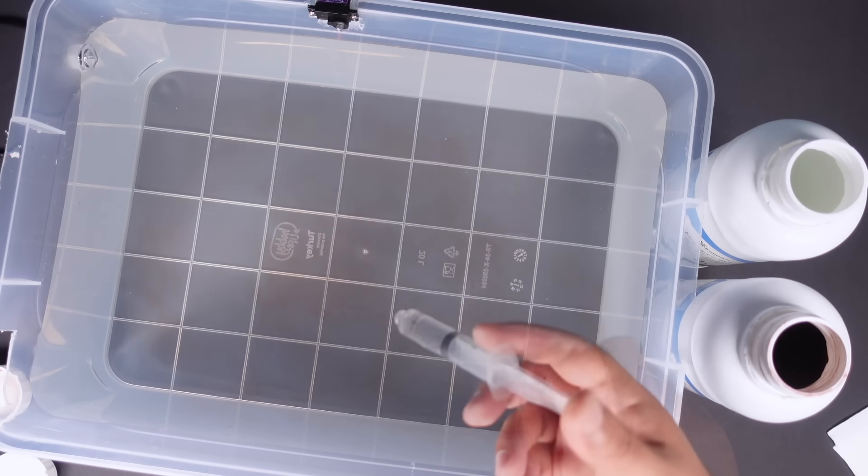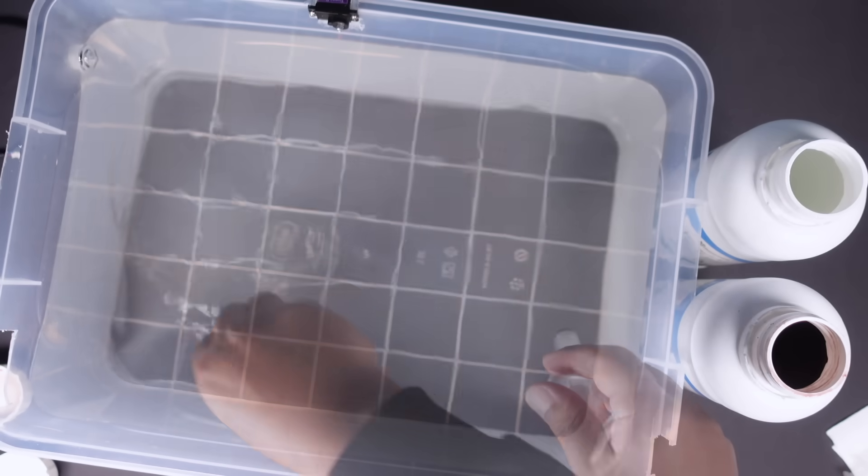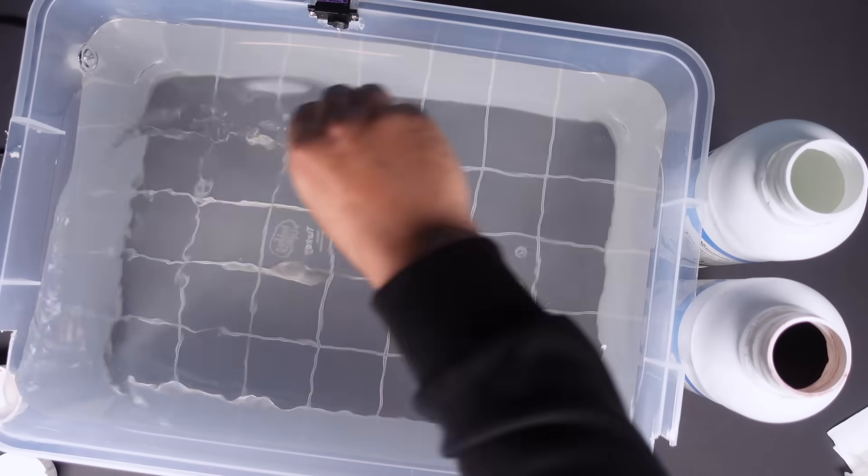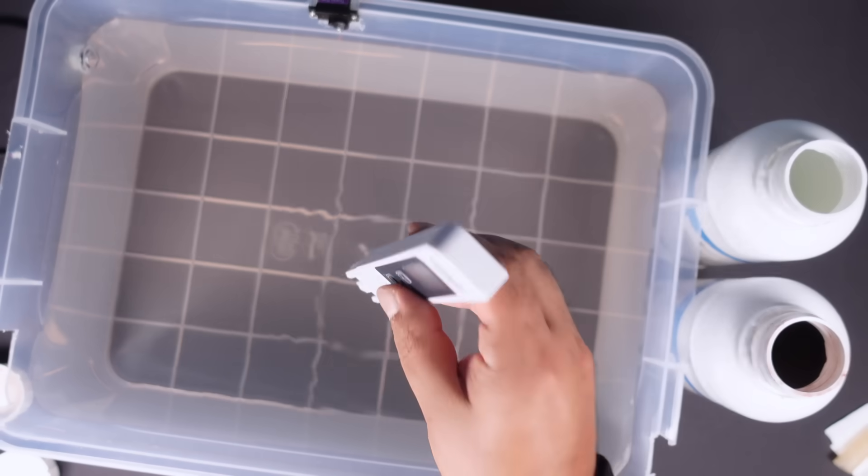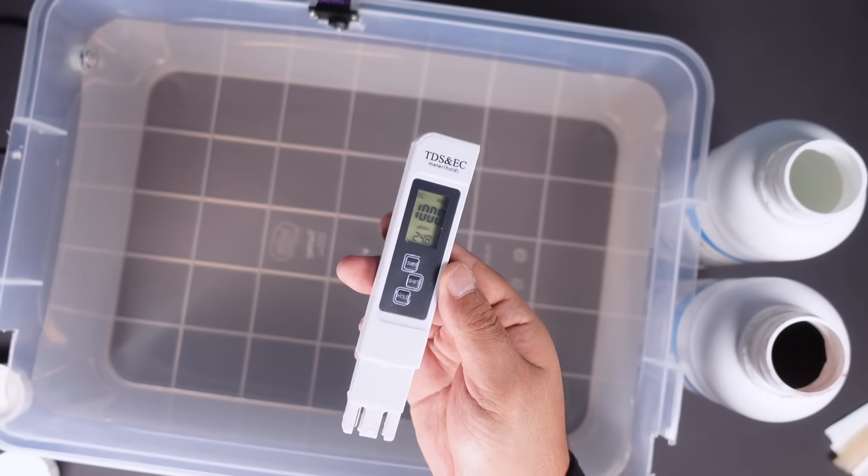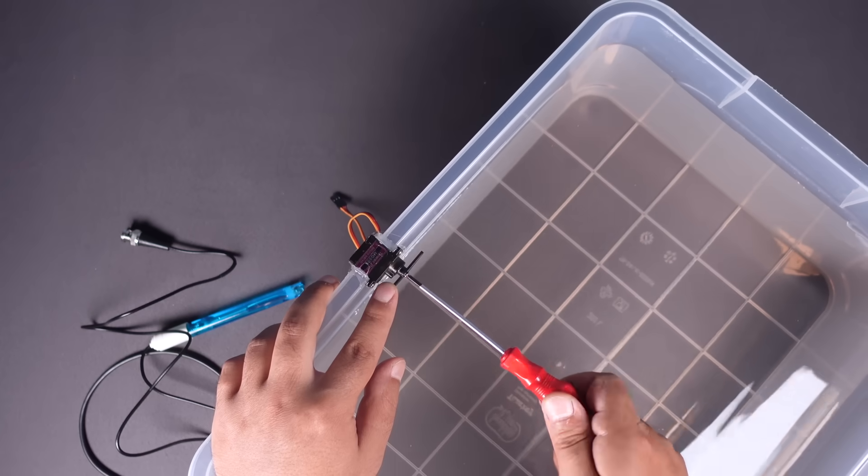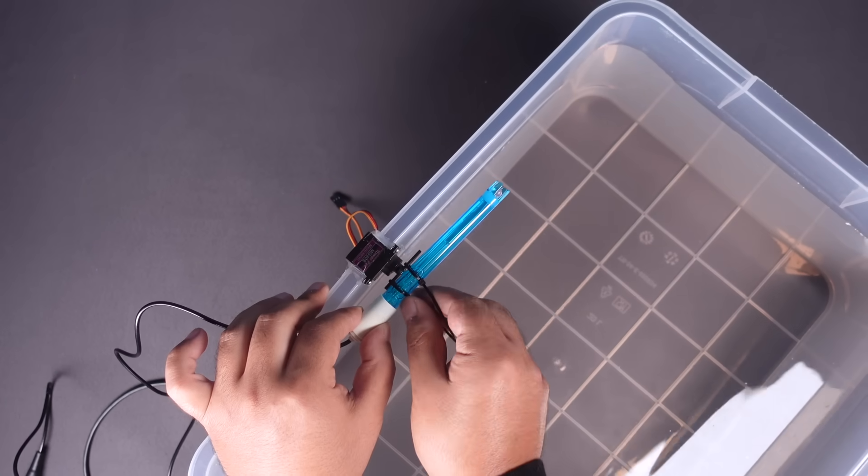The most important point here is to add equal volumes of nutrients, A and B, to the water. In this section, let's finish the preparation of the water tank and move on to the construction of the hydroponic system.